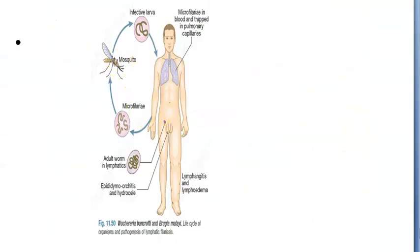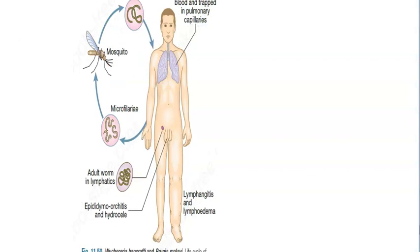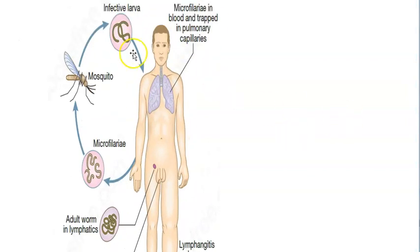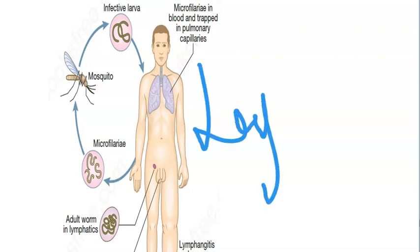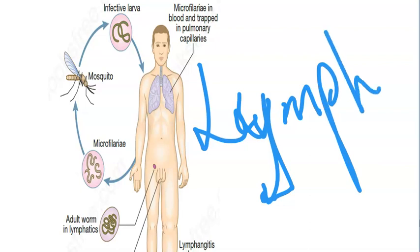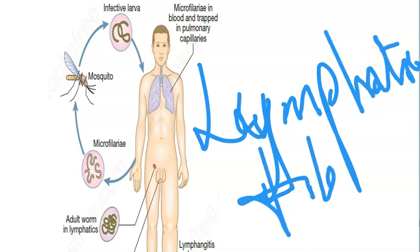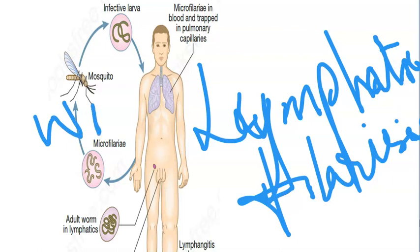Here is a mosquito that has microfilaria inside it. It's going to bite this innocent man and give the infective larva to him. He is then going to have lymphatic filariasis.